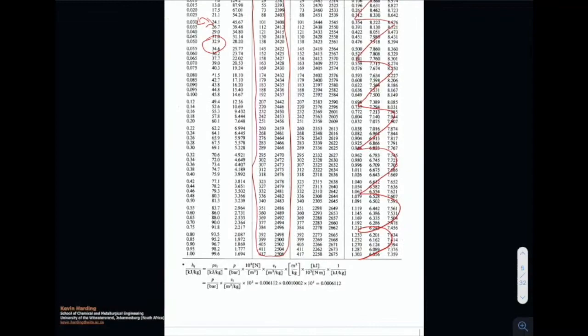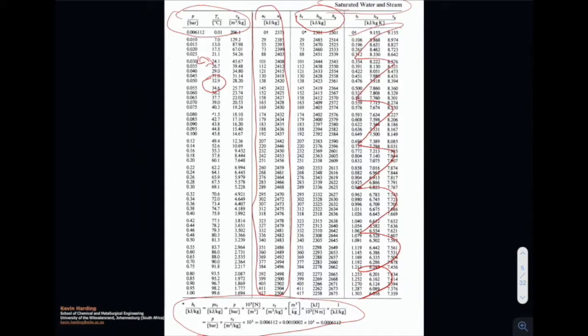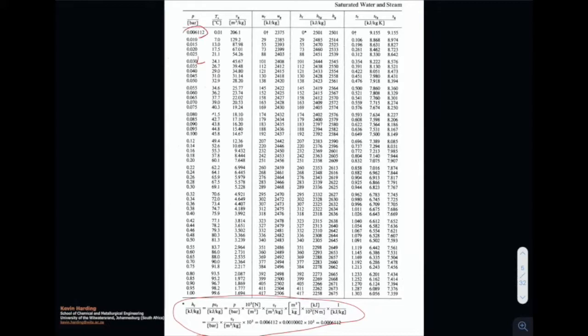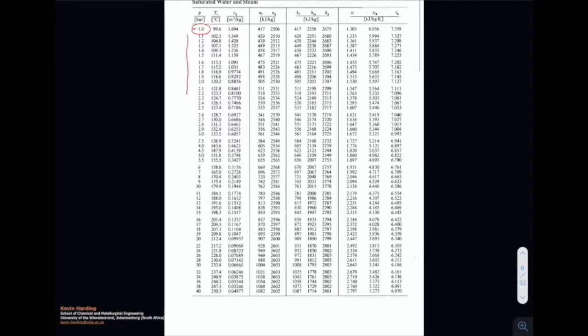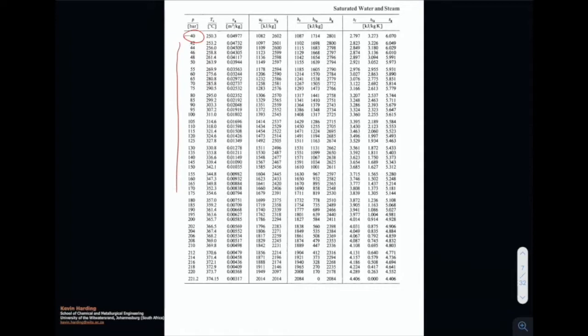Please take note in your own time of the units and unit conversions given at the bottom. Page 3 starts at 0.0612 bar and moves down to 1 bar. The next page starts at 1 bar and goes down to 40 bar — nothing new, just higher pressures. The following page goes from 40 bar all the way to 220 bar. A note on specific volume: the units are cubic meters per kilogram, which is the inverse of density.